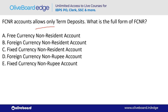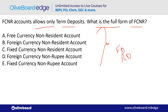FCNR accounts allow only term deposits — that means only Fixed Deposits and Recurring Deposits, not demand deposits like current and savings accounts. The full form of FCNR is Foreign Currency Non-Resident Account — option B. Make sure to read about FCNR accounts in detail.